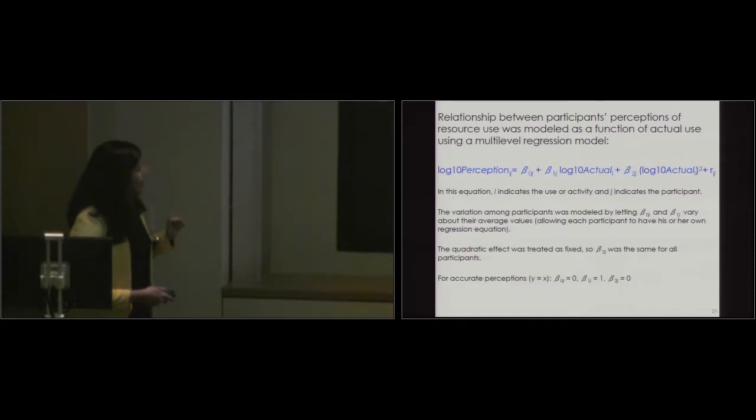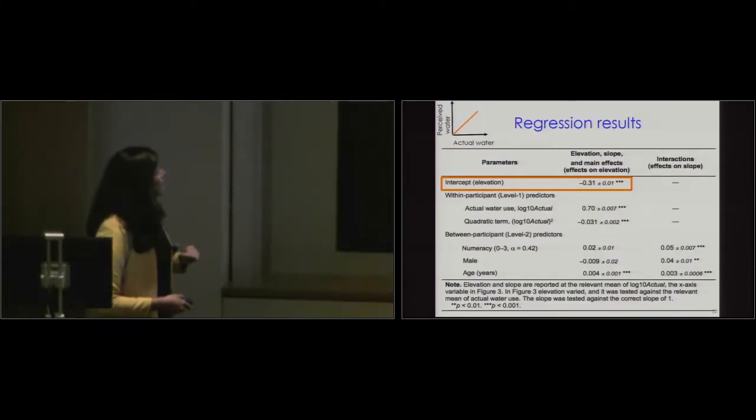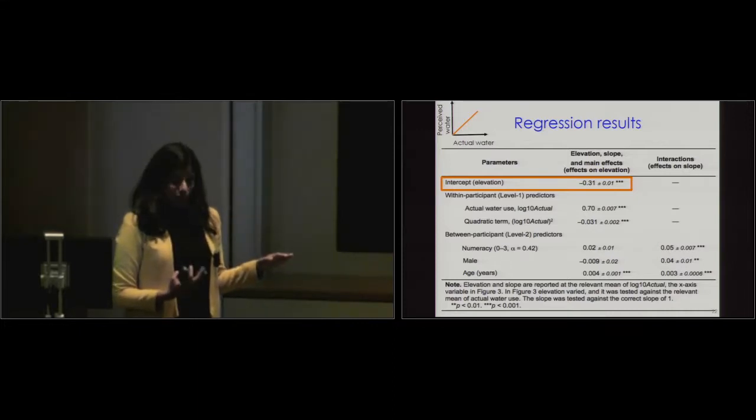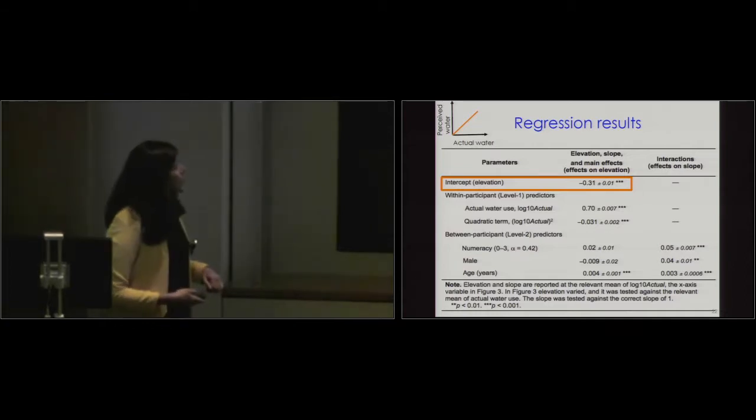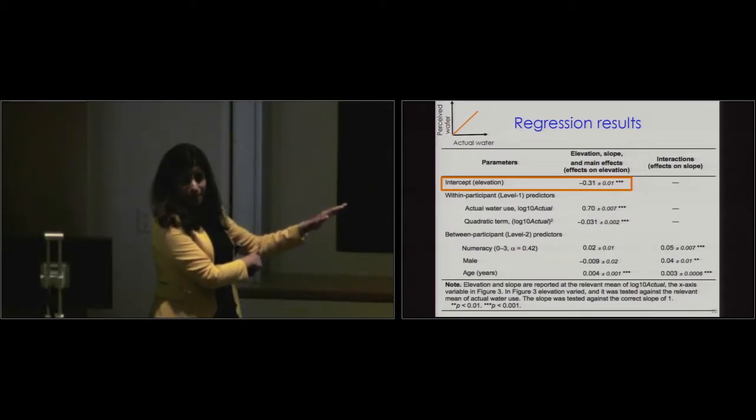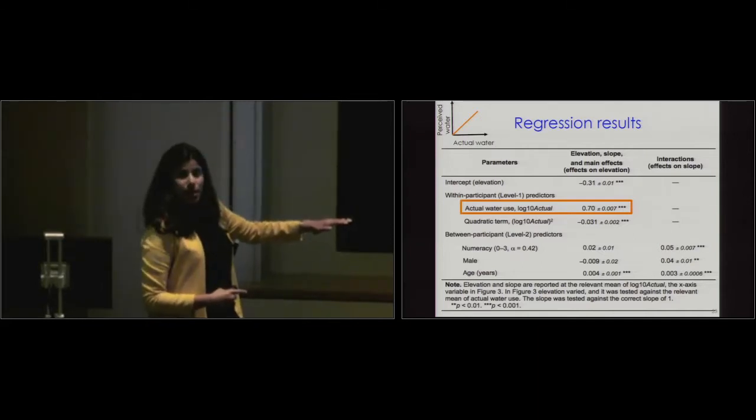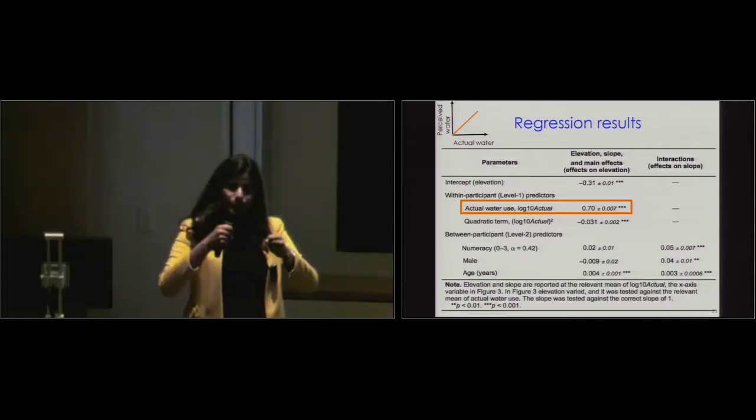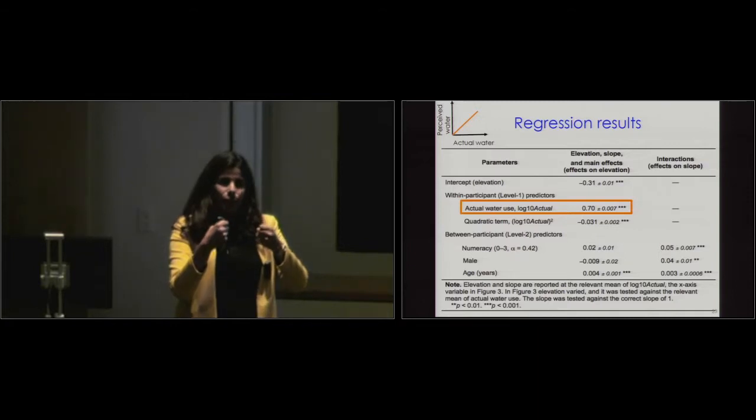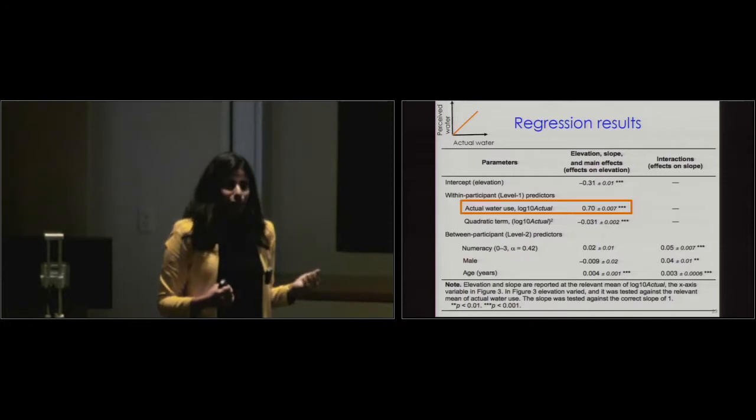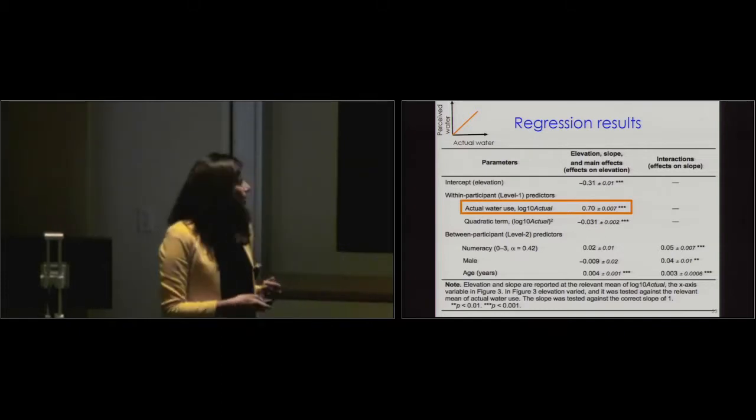So as we said, if perceptions match reality, it's a Y is equal to X line. So for a Y is equal to X line, what should the intercept be? Zero. And the slope should be one, right? So what we found was the intercept for water is actually, rather than zero, it's negative 0.3. So rather than it being zero, the whole curve is shifted down. So that means that in general, there's an underestimation. We know the slope should be one. So rather than the slope being one, it's 0.7. So rather than it being as steep, it's a little bit shallower, right? So what the shallowness means is that activities that are supposed to be spread apart, are smooshed or compressed together. So the thing is, I know I can correctly rank order these appliances. So I know that a dishwasher uses more water than a standard flush. But I don't know by how much more. So that's the, how much more is the part that people get lost in. So the relative differences are compressed.